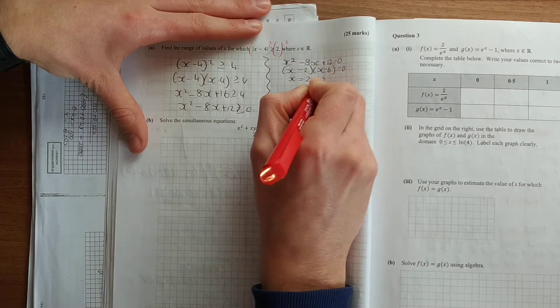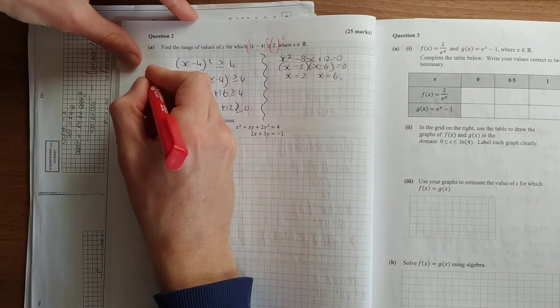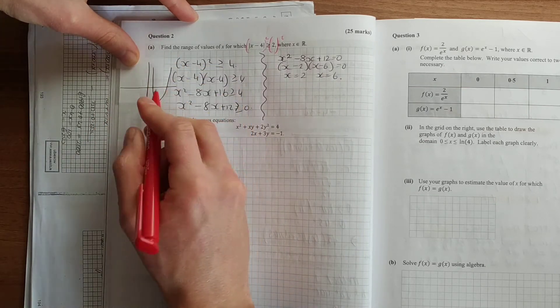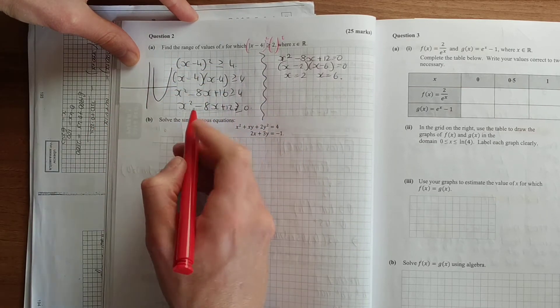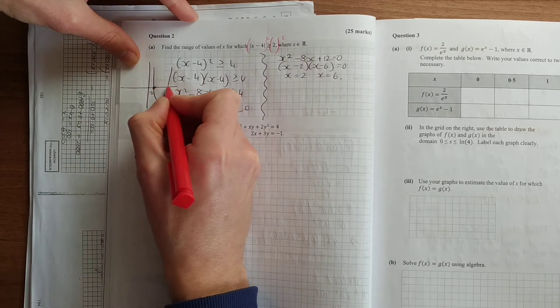So the two roots of that u-shaped function is 2 and 6. That means there's the u-shape, this is this here bit, there's your root 2, the root 6.